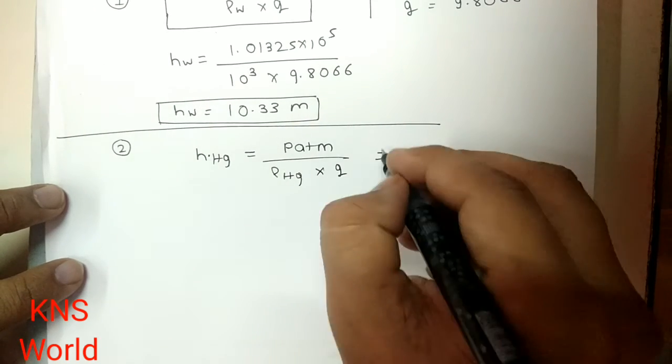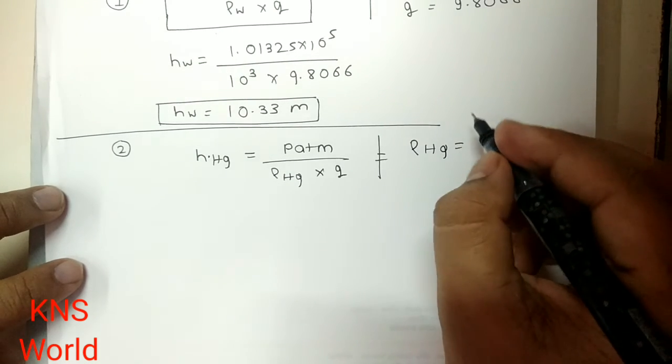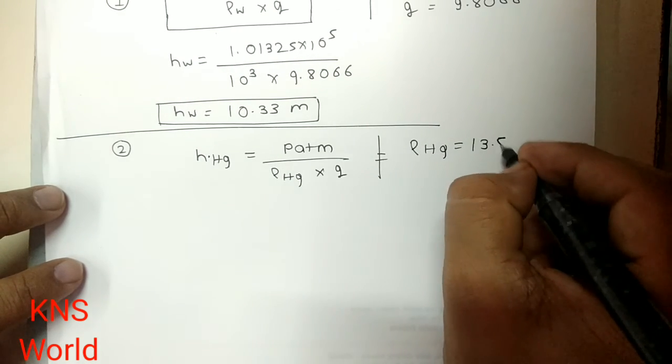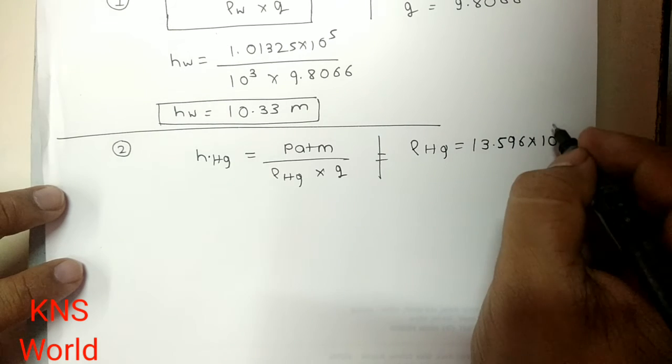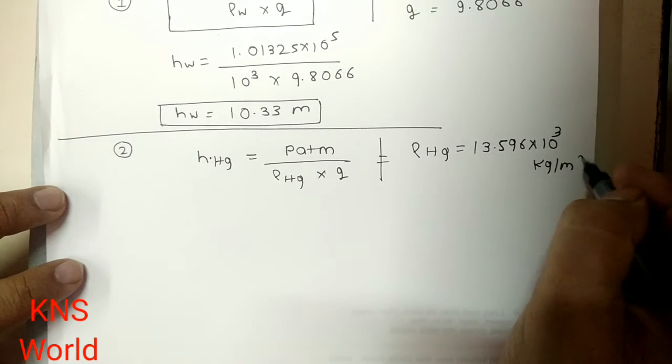So only the change here is rho Hg, density of mercury is 13.596 into 10 raise to 3 kg per meter cube.